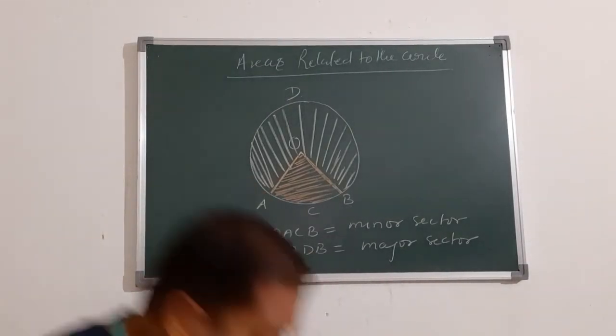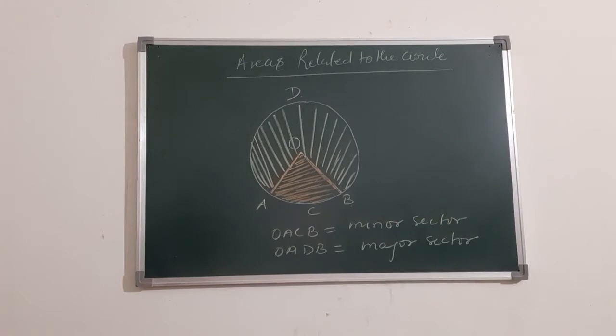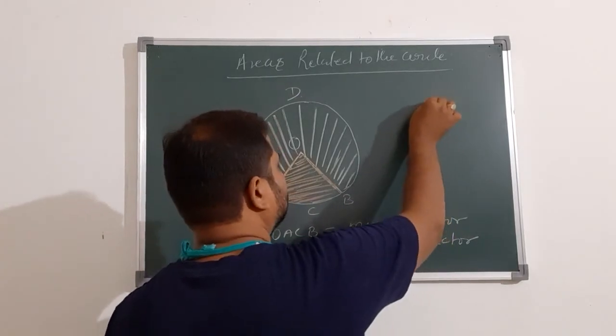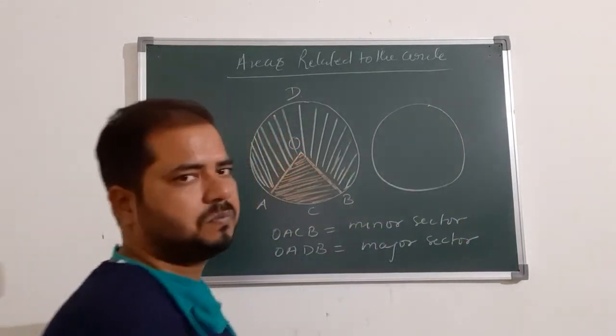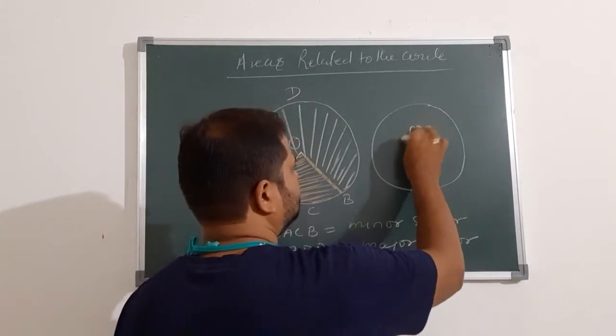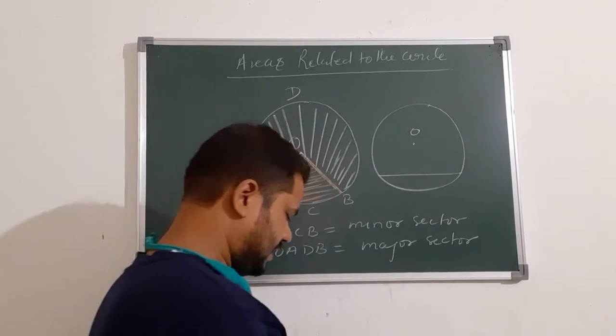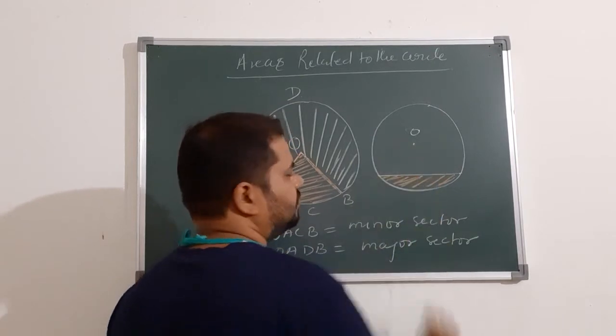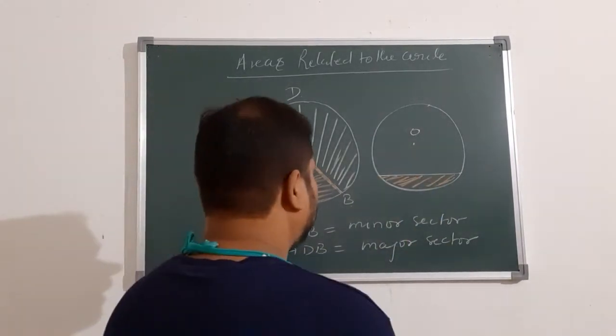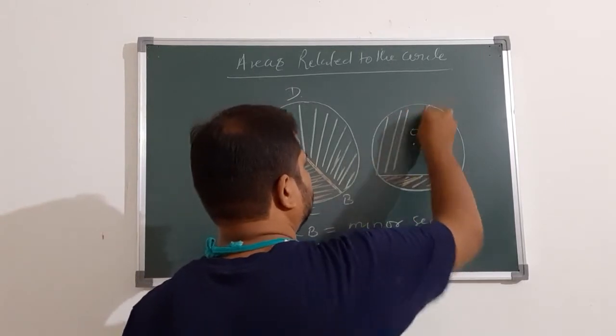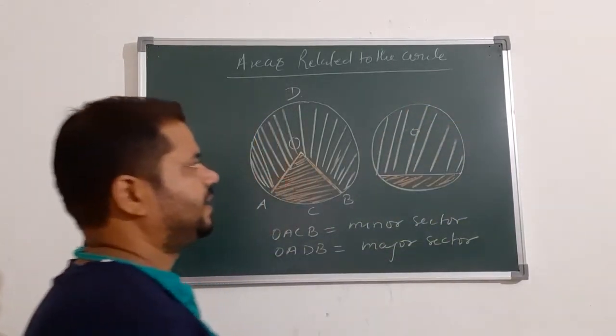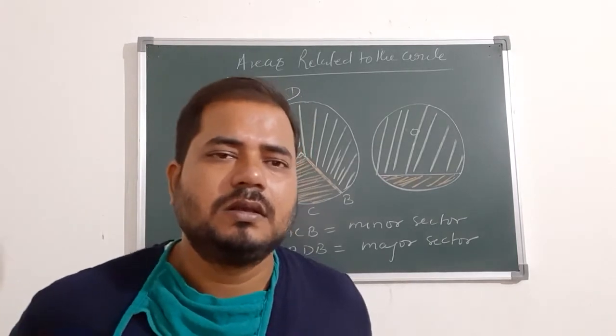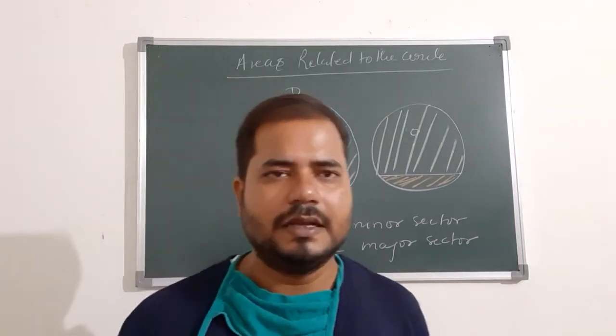Similarly we can see what is the segment of a circle. This circuit is A and this is the, for a general center O, this particular part that means this one is minor segment and this particular part is major segment. The upper one is major segment and the lower one is minor segment.